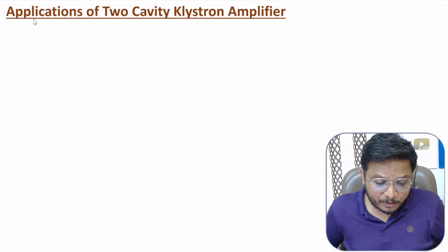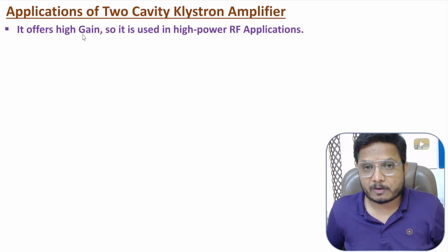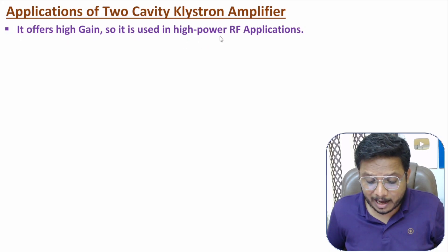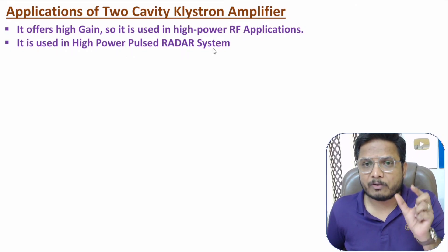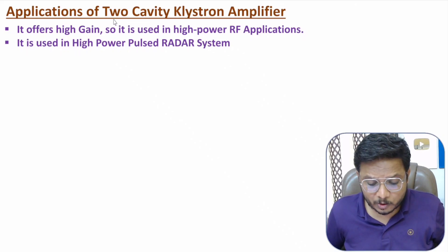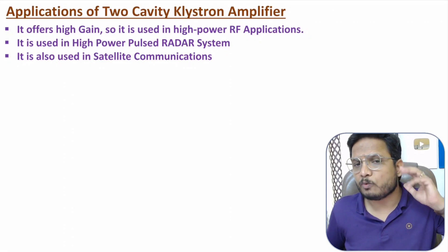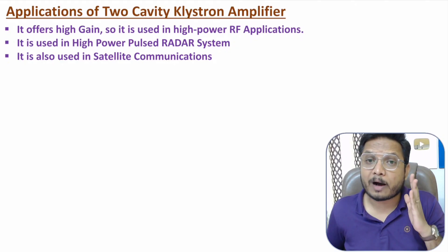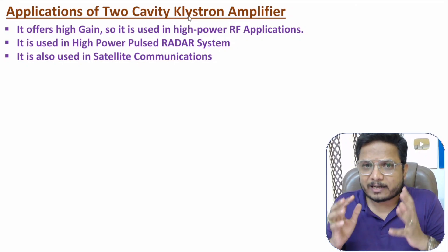Now a few applications. The two-cavity klystron amplifier offers very high gain, making it useful in high power RF applications. It is also used in high power pulsed radar systems, where high power RF signal needs to be transmitted for a short pulse duration. Additionally, it is used in satellite communication, where signals must be transmitted over very long distances, requiring high power RF signals generated by the two-cavity klystron amplifier.